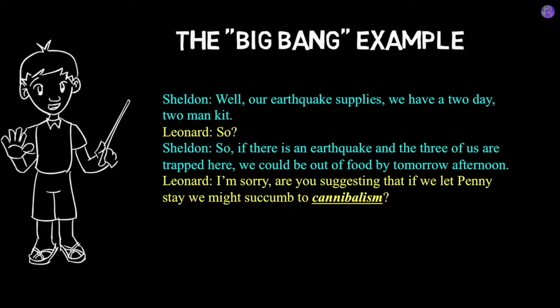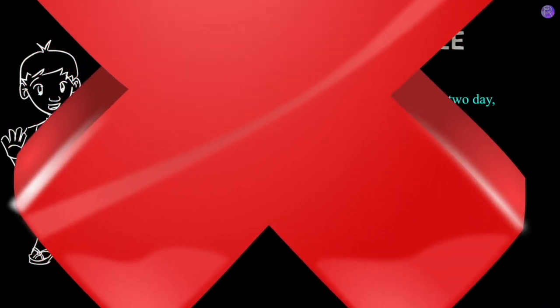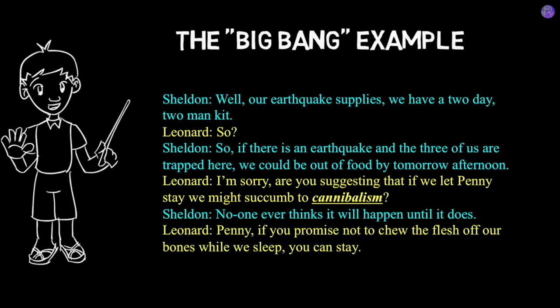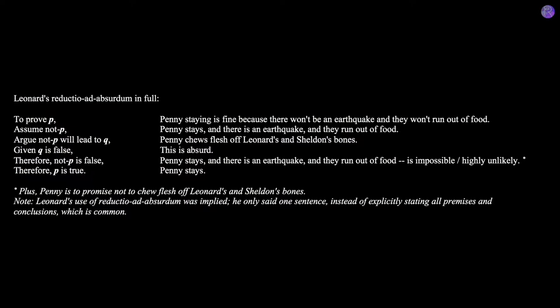At this point, Sheldon should have said: 'No, that's not what I'm saying — your argument is a strawman.' But instead, Sheldon actually says: 'No one ever thinks it's going to happen until it does.' By saying this, Sheldon is actually confirming that the cannibalism argument is what he meant to imply — that if Penny stays, they may succumb to cannibalism. This gives Leonard the ammunition to attack Sheldon's position using reductio ad absurdum, and that's exactly what Leonard did. Leonard says to Penny: 'If you promise not to chew the flesh of our bones while we sleep, you can stay.' It is important to note that Leonard's use of reductio ad absurdum was only made possible by his prior use of the strawman argument and successfully tricking Sheldon into buying into that strawman.